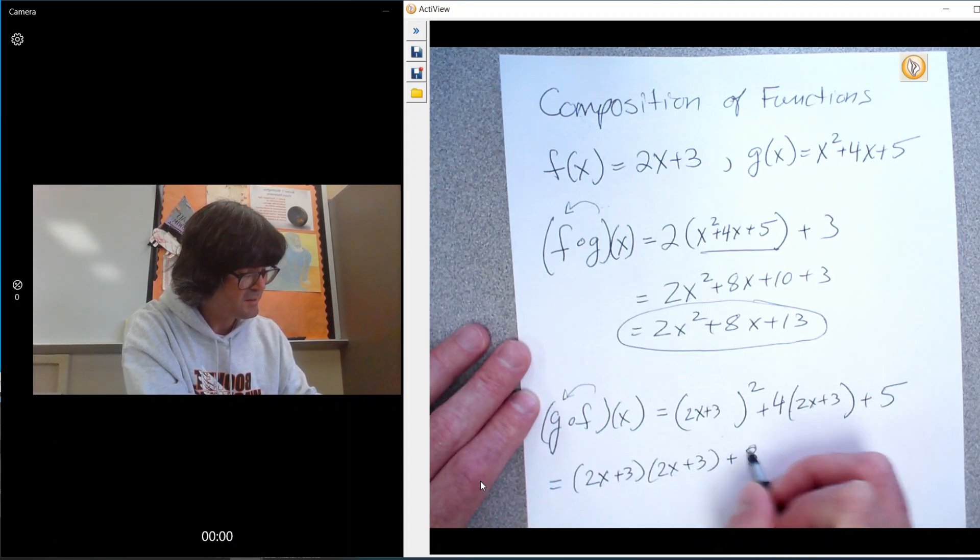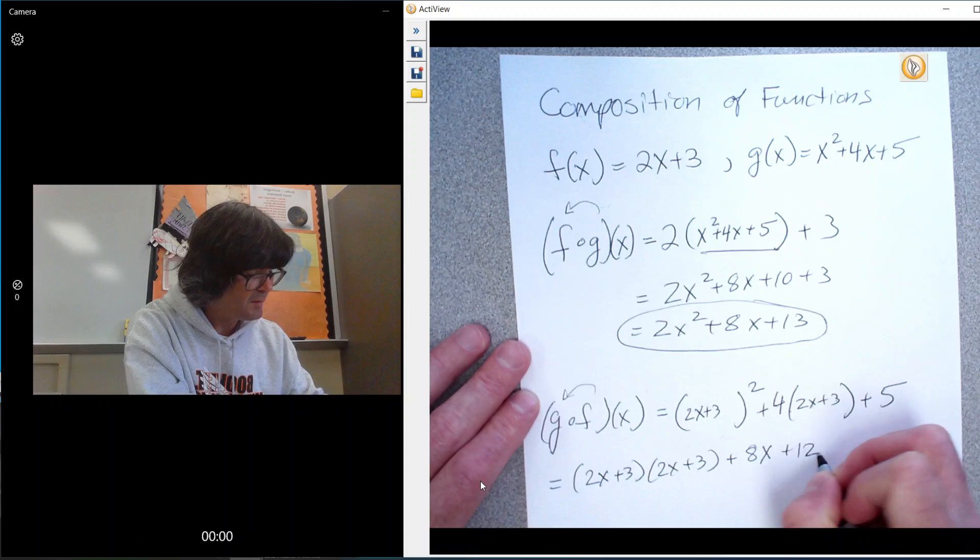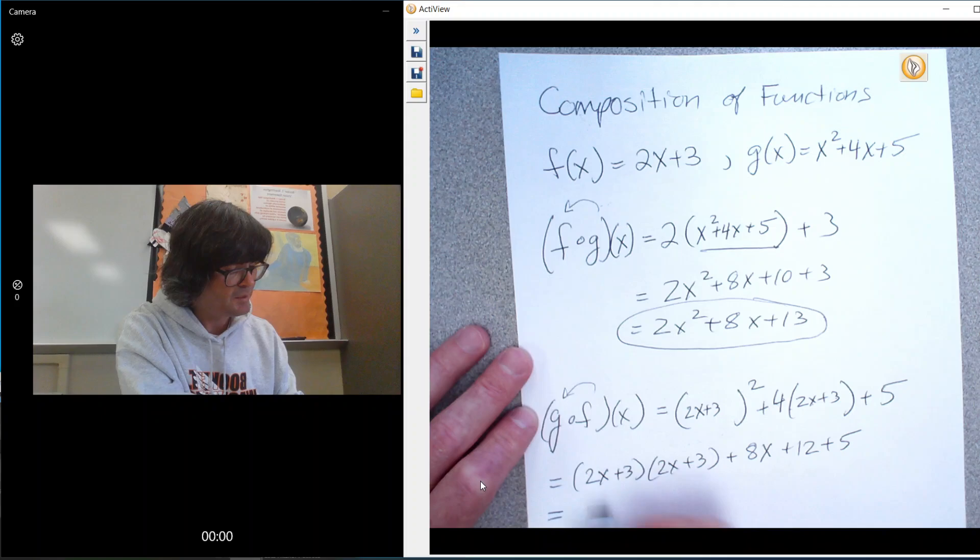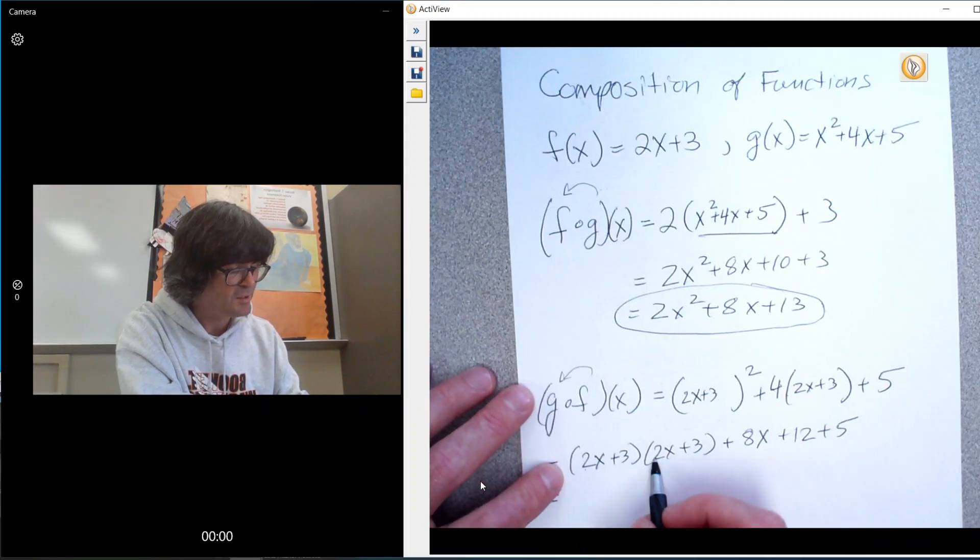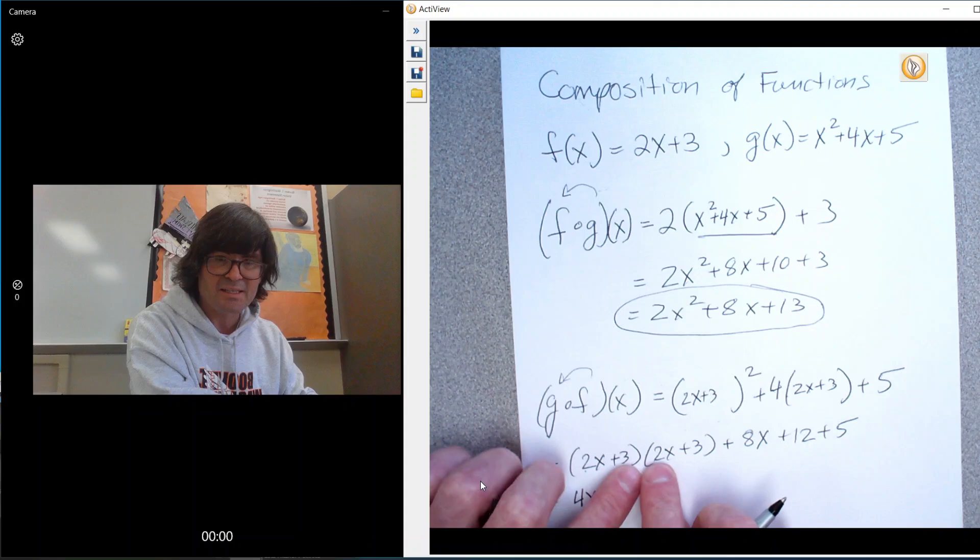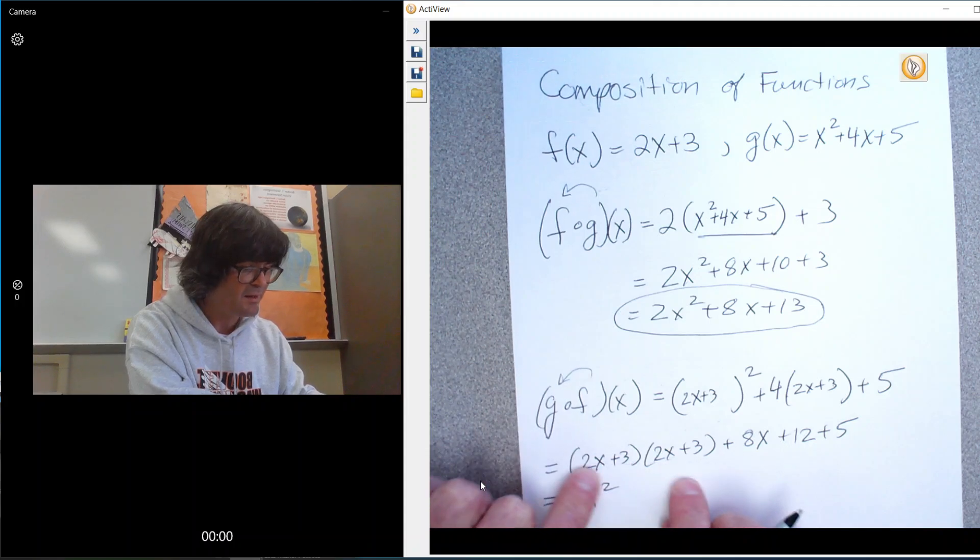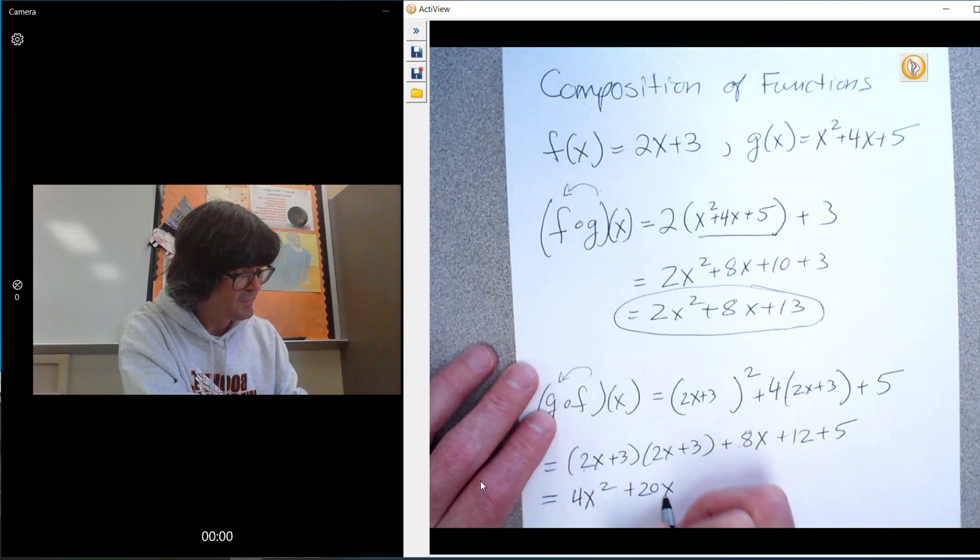4 times 2x is 8x. 4 times 3 is 12. And plus 5 just kind of hangs out there. And ultimately, if you use FOIL to multiply this out, 2x times 2x is 4x squared. This is 6x, and then another 6x makes 12x. And then with the 8x, you get 20x, ultimately.